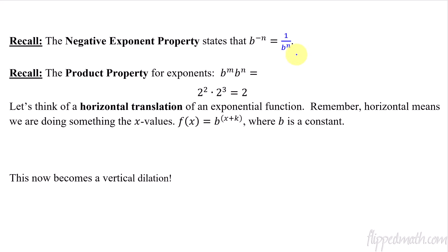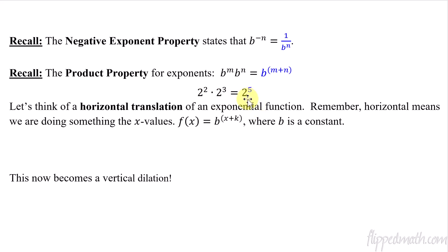The next one is the product property. If you have bases that are the same and you're multiplying them, what do you do with the exponents? You add them together. So if the bases are the same and you're multiplying, then you add exponents. So 2 squared times 2 to the third equals 2 to the fifth. Common mistake: students write 2 to the sixth — don't do that. You're adding exponents when the bases are the same and you're multiplying.